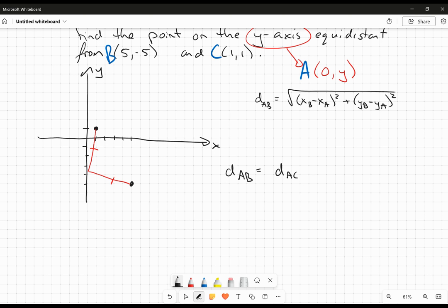Which means this is going to be the square root, and I'll do the square root later. It's going to be xB, so 5 minus 0 squared plus negative 5 minus y squared. That is the distance from A to B. And that is going to equal the distance from A to C. So, that's going to be 1 minus 0 squared plus 1 minus y squared. And again, square root it.